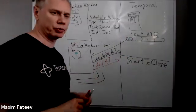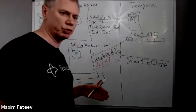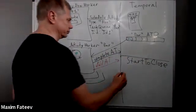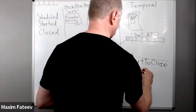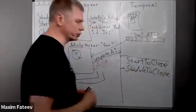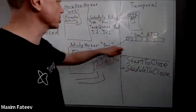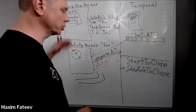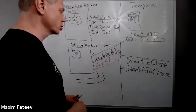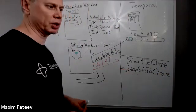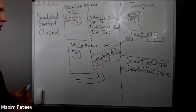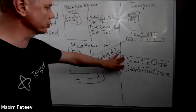Sometimes you also want to limit the overall maximum time of activity execution — for how long should it retry before reporting failure to the workflow. For that we have the schedule-to-close timeout. This is the overall execution timeout. It means the activity can stay some time in the task queue, get picked up, fail, and retry — the overall cycle from invocation to completion is limited by this timeout. You can think of it as the maximum time an activity can take to execute across all possible failure scenarios and retries.